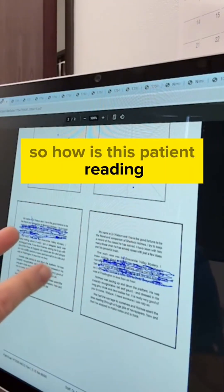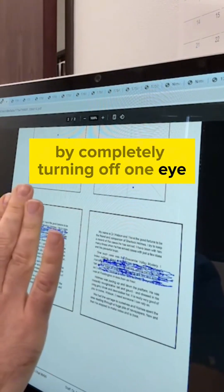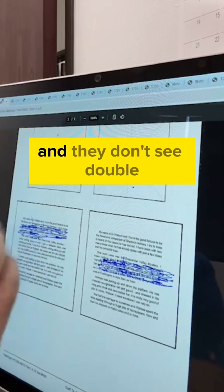So how is this patient reading? By completely turning off one eye. So that's suppression. And they don't see double.